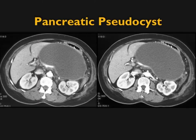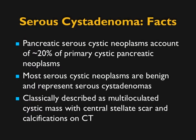Here's a large pseudocyst in the lesser sac — a very classic example. Now, serous cyst adenomas are one of my favorite lesions. The problem is sometimes the diagnosis is easy, and sometimes it's hard. The biggest challenge is the many different appearances: the classic, the almost classic, and the strange and hard to believe. They account for about 20% of primary cystic pancreatic neoplasms. Essentially they're almost always benign, but they can cause mass effect and duct obstruction. Classic features include scars and calcification, and they're more common in middle-aged and older females.